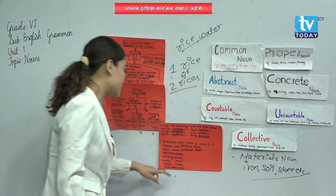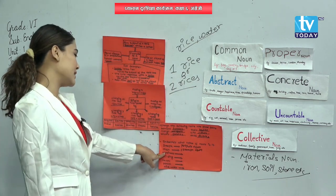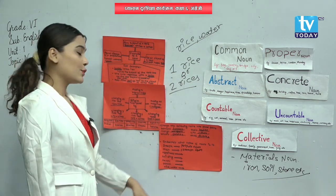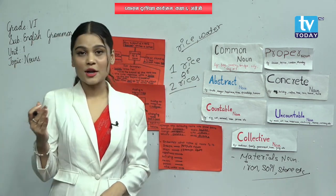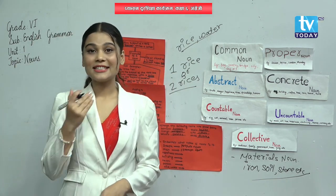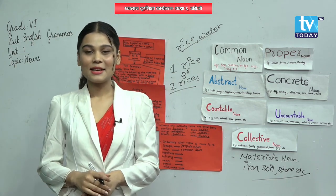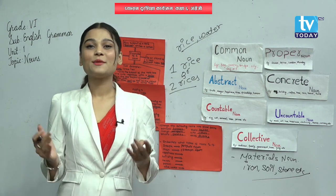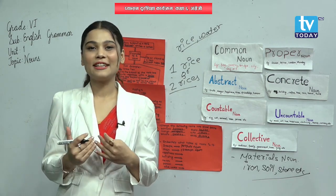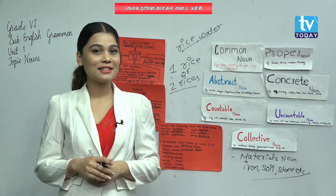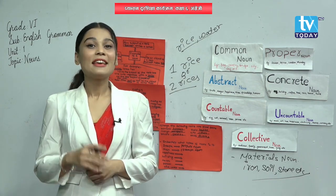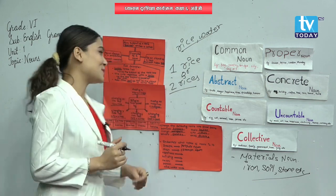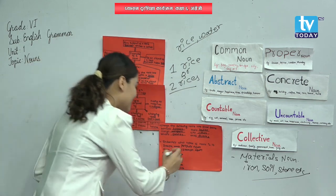And next one is happiness — we cannot touch it, we cannot taste it, but we can feel it. We can feel happiness. That means it is abstract noun.